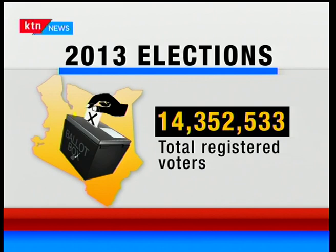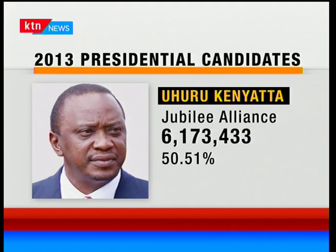Raila Odinga has been known as a man of many alliances — from Orange Democratic Movement to CORD to where he is right now in NASA. Other presidential candidates at that time included Musalia Mudavadi, vying under the United Democratic Forum, UDF. Interestingly, Mudavadi was vice president for only two months, from November 2002 to January 2003 during Moi's era, and had been a running mate for both Uhuru Kenyatta and Raila Odinga.